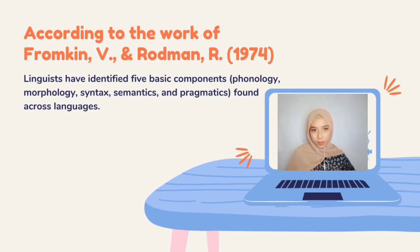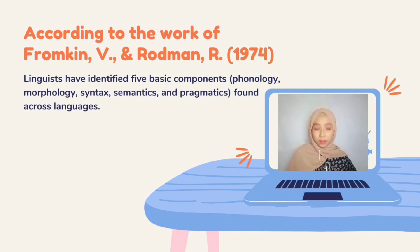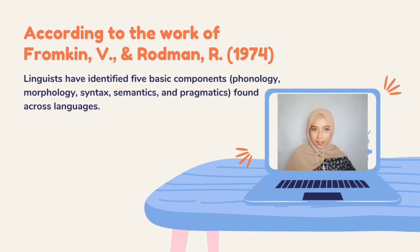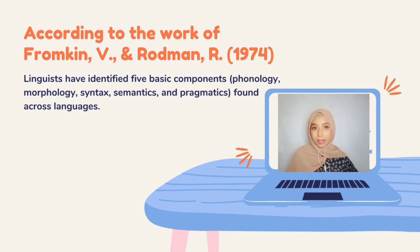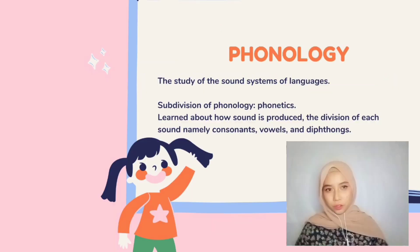According to the work of Framkine and Goldman in 1974, linguistics has identified five basic components. They are phonology, morphology, syntax, semantic, and pragmatics, which are found across languages. So first is phonology.